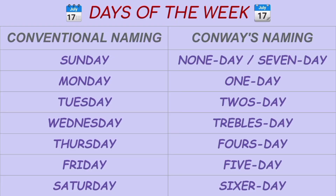Before we learn the trick, let's remember Conway's names for the days of the week — then it becomes easy to add the days. Days of the week: Sunday is 0, Monday is 1, Tuesday is 2, Wednesday is 3, Thursday is 4, Friday is 5, Saturday is 6.